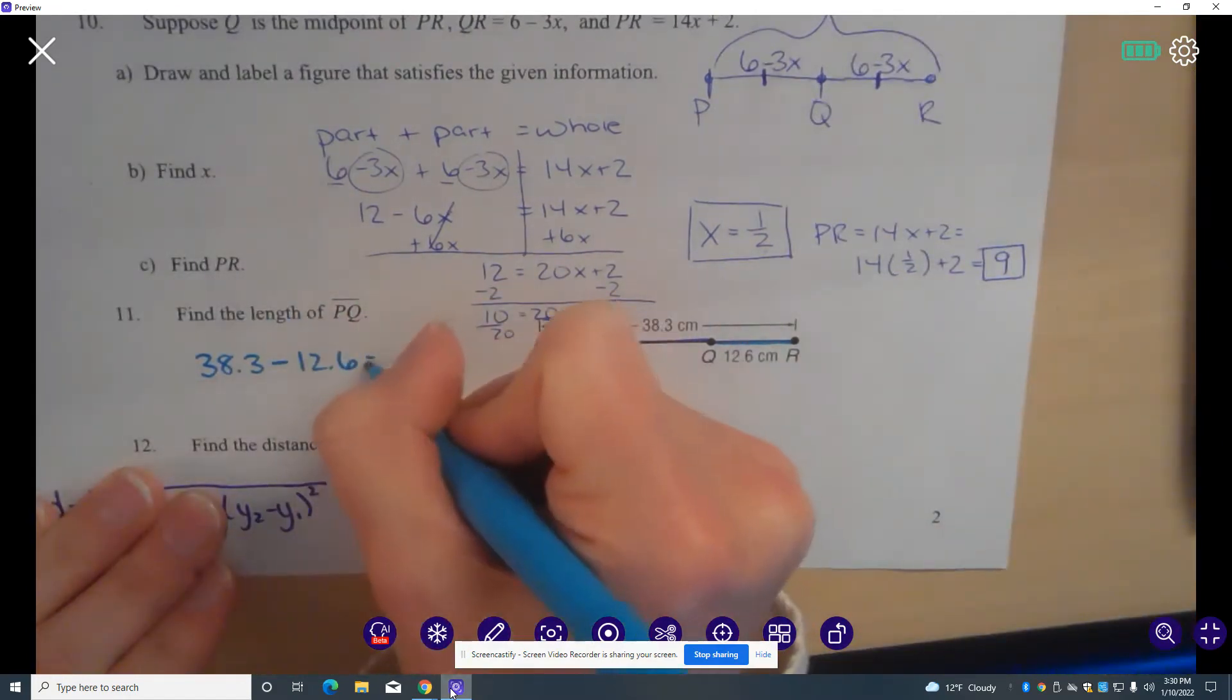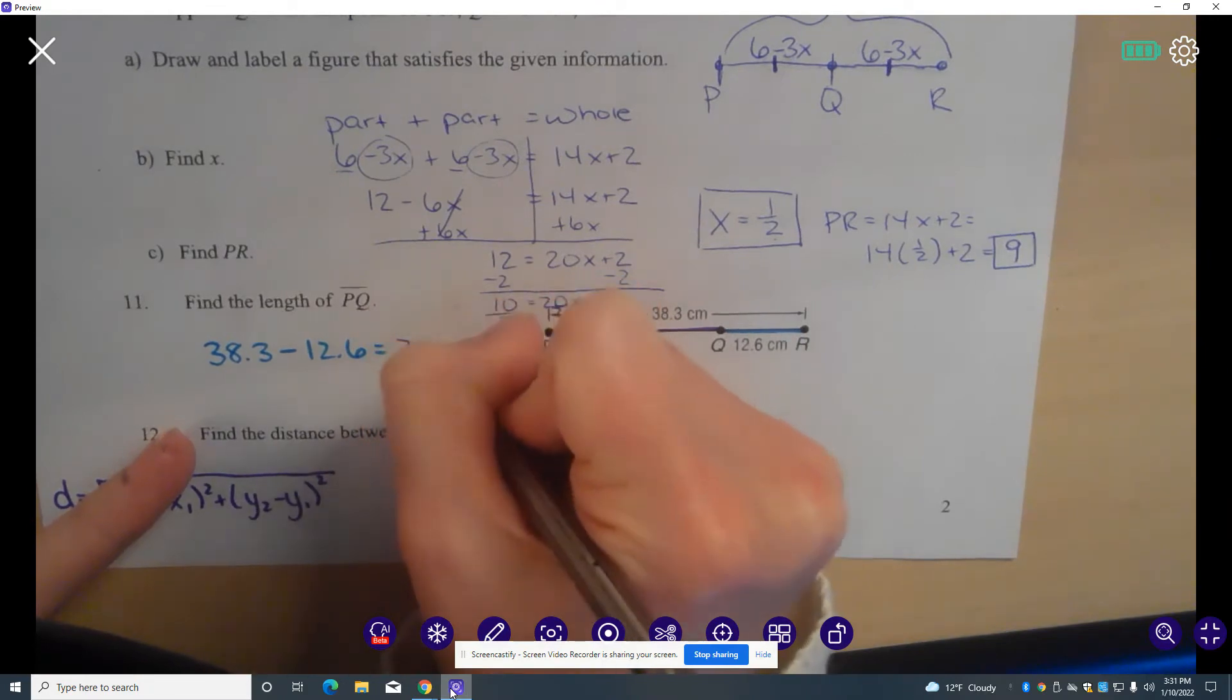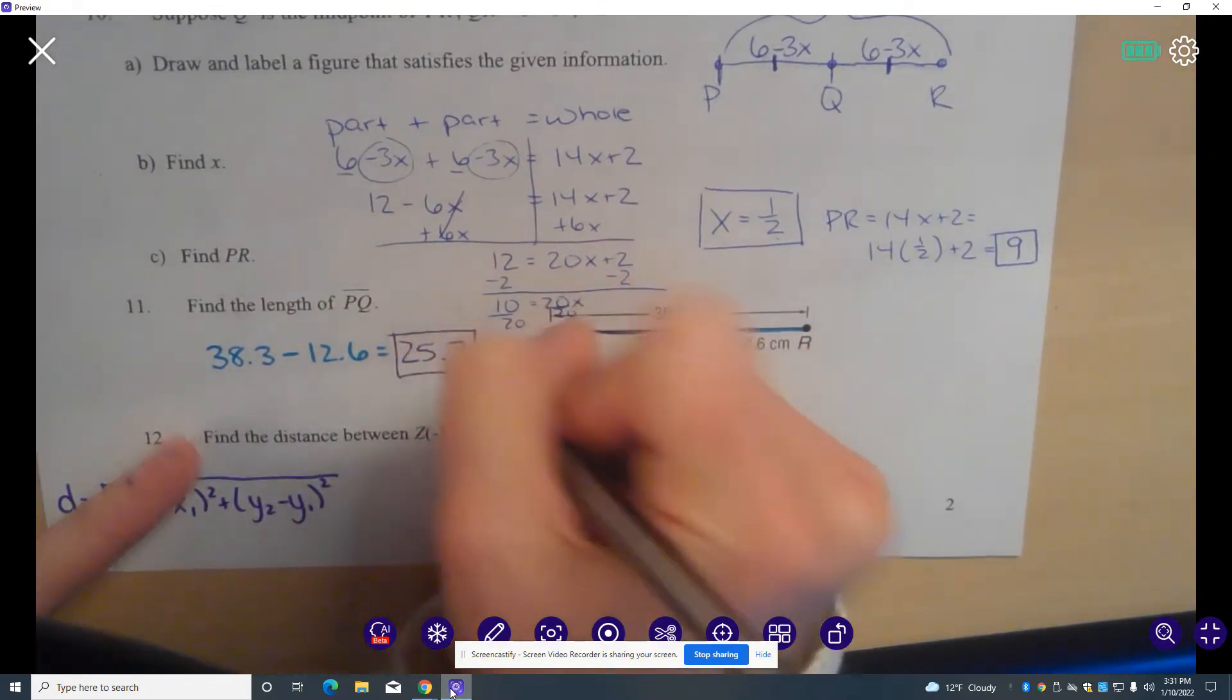to get the leftover amount, which will be the length of PQ. So 38.3 minus 12.6 tells me that the length of PQ is 25.7.